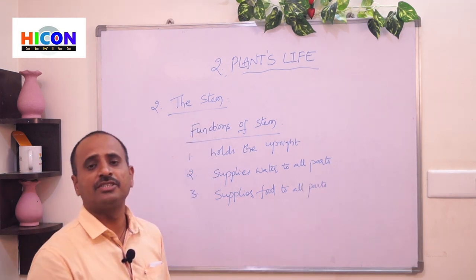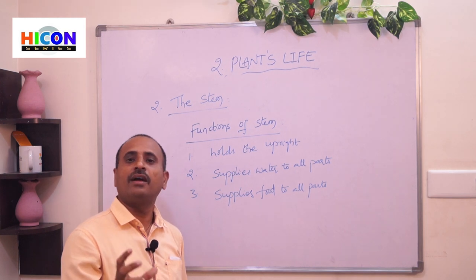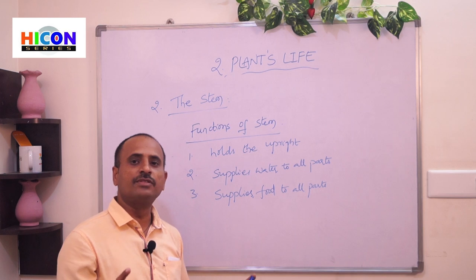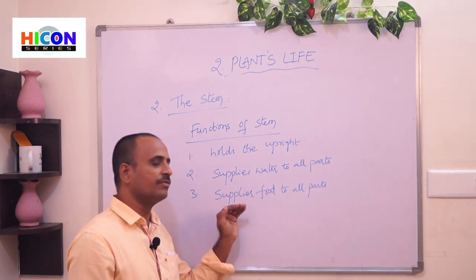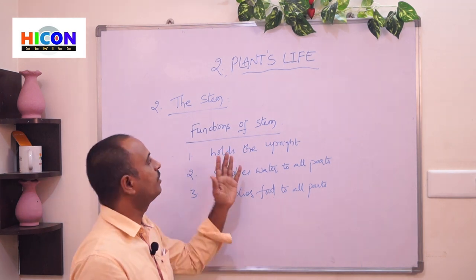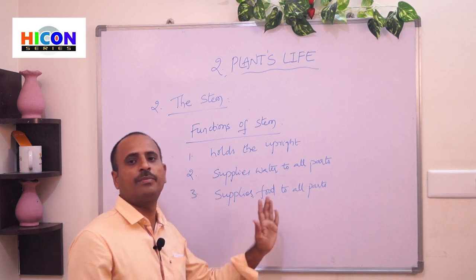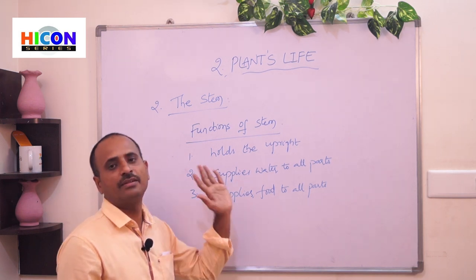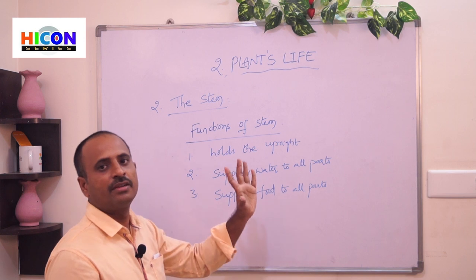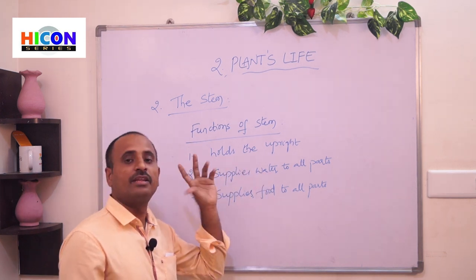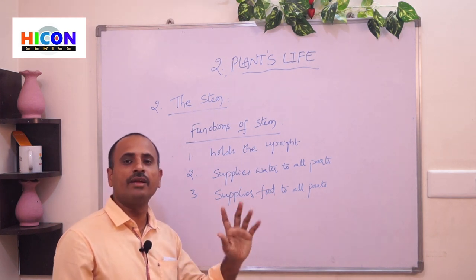Leaves prepare food by the process of photosynthesis, using sunlight, water, carbon dioxide, and chlorophyll. The food prepared by the leaves is supplied to all parts of the plant with the help of the stem. The stem acts as a carrier — it carries water and food to all parts of the plant. Without water, photosynthesis cannot take place in the leaves.